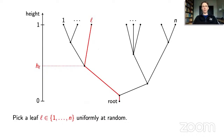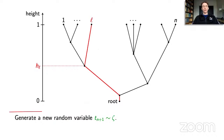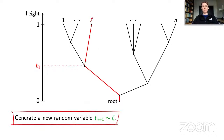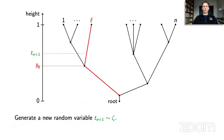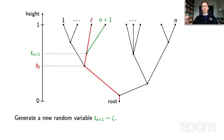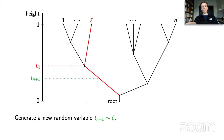In the second step we generate a new random variable t_{n+1} from the parameter distribution zeta. We then have two cases. In the first case, if this random variable is greater than h_l, we attach the new branch exactly at that height, and record that h_{n+1} equals this value. In the second case, where the random variable is less than h_l, we round up to h_l and attach the new branch at height h_l, again recording h_{n+1} accordingly.